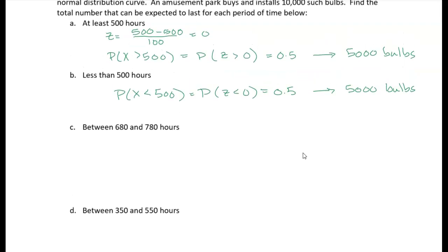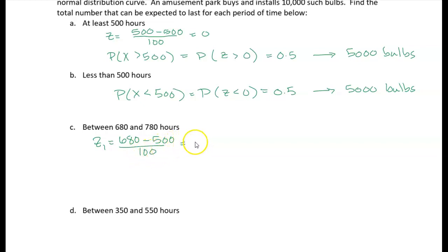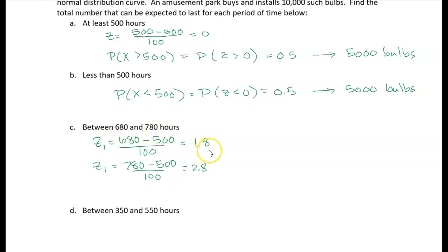What's the probability that a light bulb lasts between 680 and 780 hours? Let's calculate the corresponding z-scores. For 680: 680 minus 500 divided by 100 gives us 1.8. For 780: 780 minus 500 divided by 100 gives us 2.8. So 680 to 780 corresponds to 1.8 to 2.8 standard deviations above the mean.